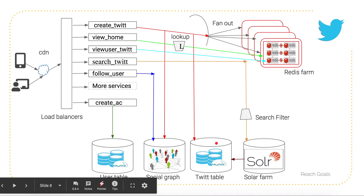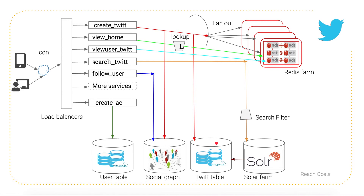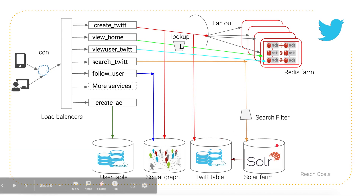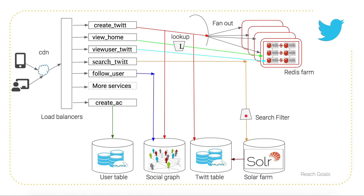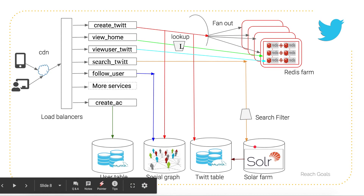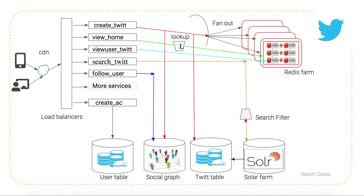The third operational issue is search filters. Nowadays many legal requirements exist — certain countries prohibit showing certain messages. These rules keep changing based on current laws. To ensure the right content appears in the UI, the search filter must be continuously updated. Without a properly maintained search filter, content from Solr that shouldn't be shown will appear in the UI, leading to legal issues. That's why maintaining the search filter is critical.